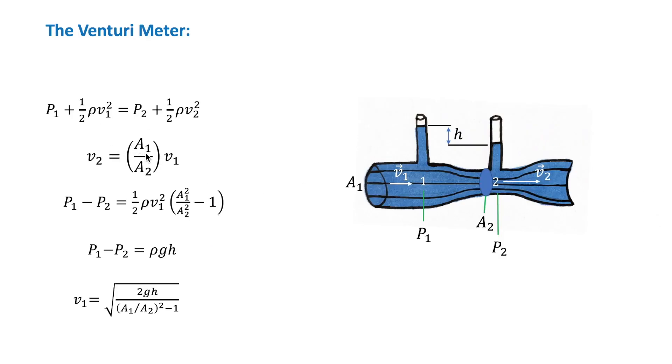And we also use the continuity equation, and we solve for P1 minus P2. But we also know that P1 minus P2 is equal to rho GH, the difference in height here of the two columns times rho G. And from this, we can find V1, the speed or the flow speed here at point 1.